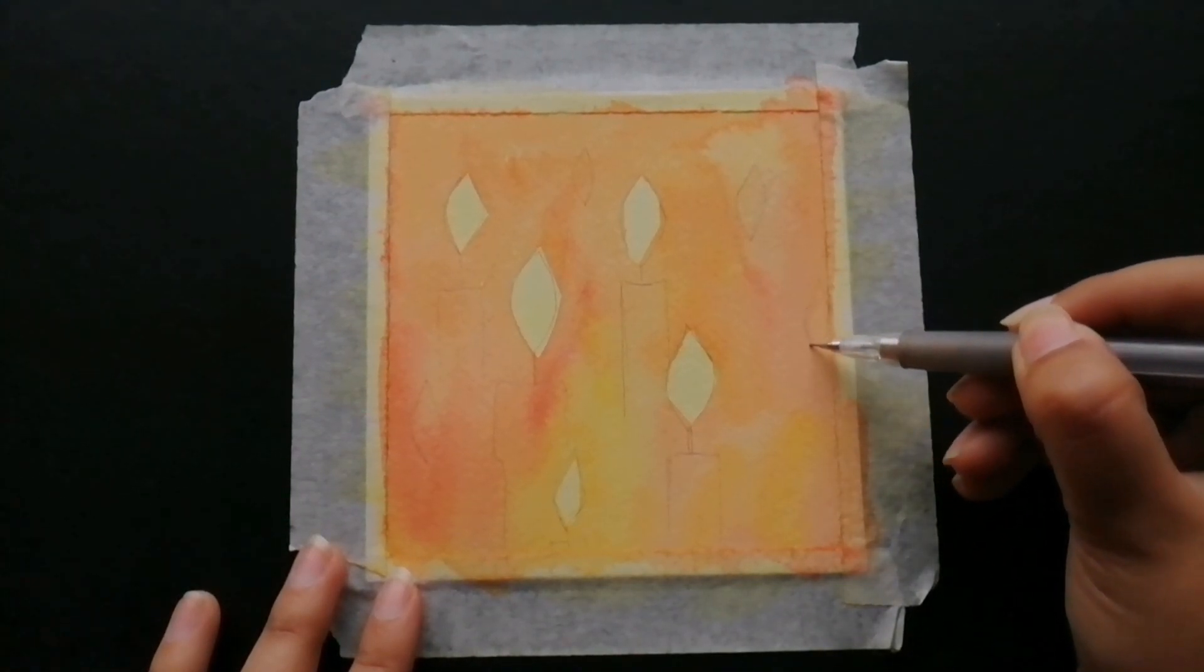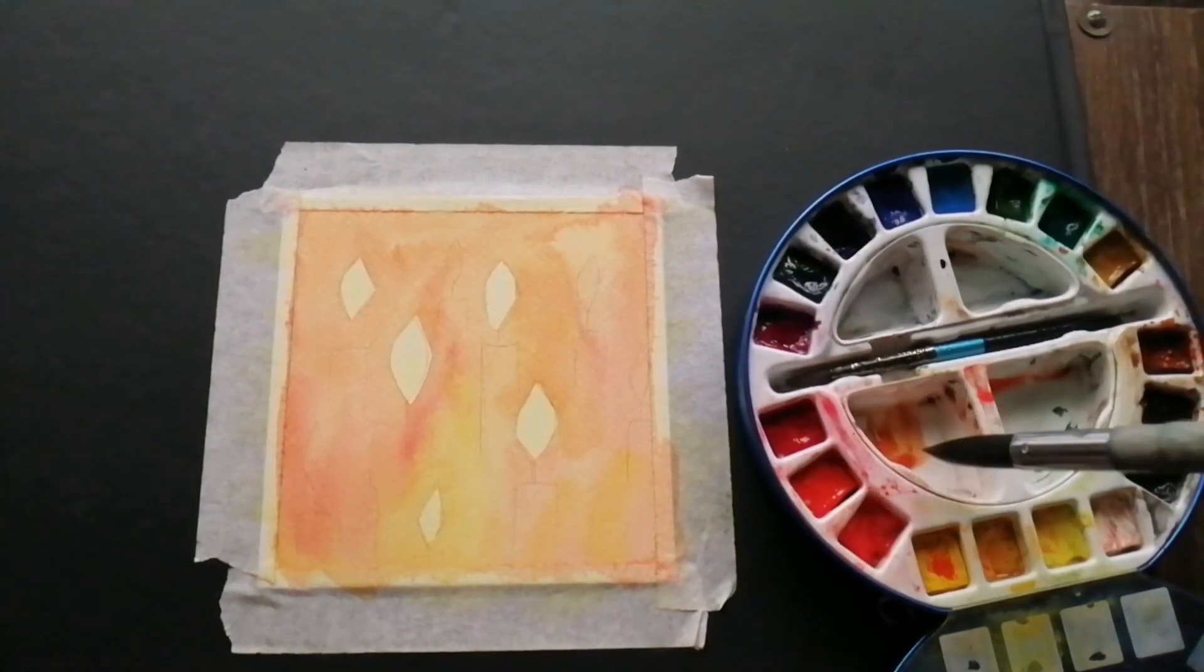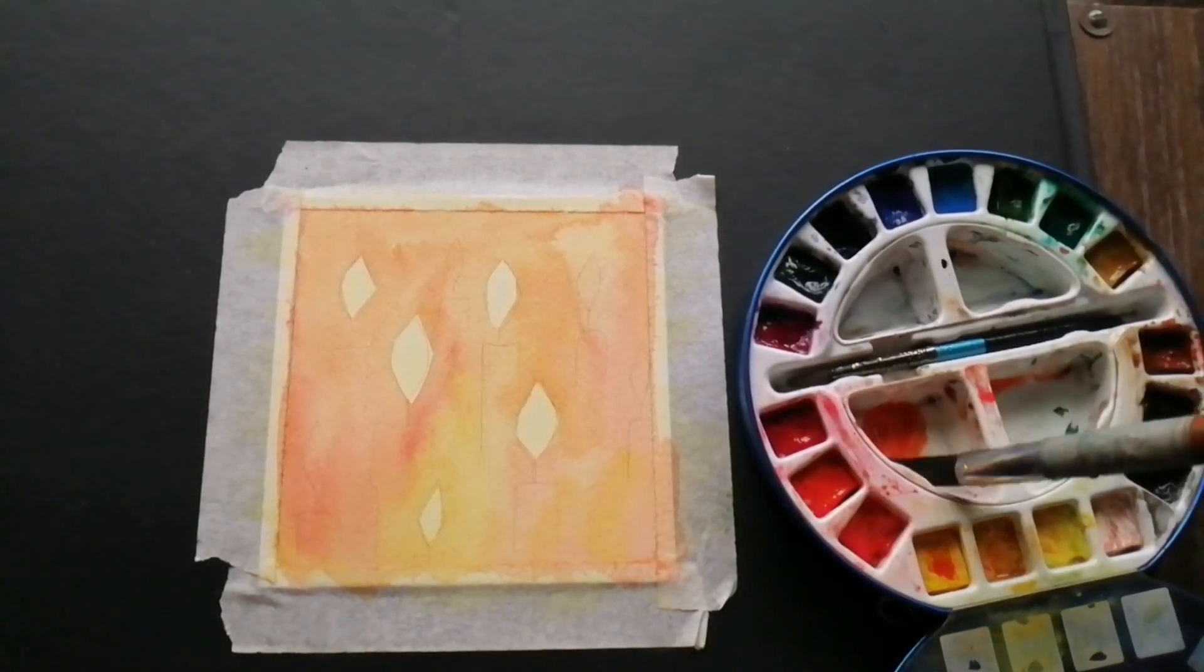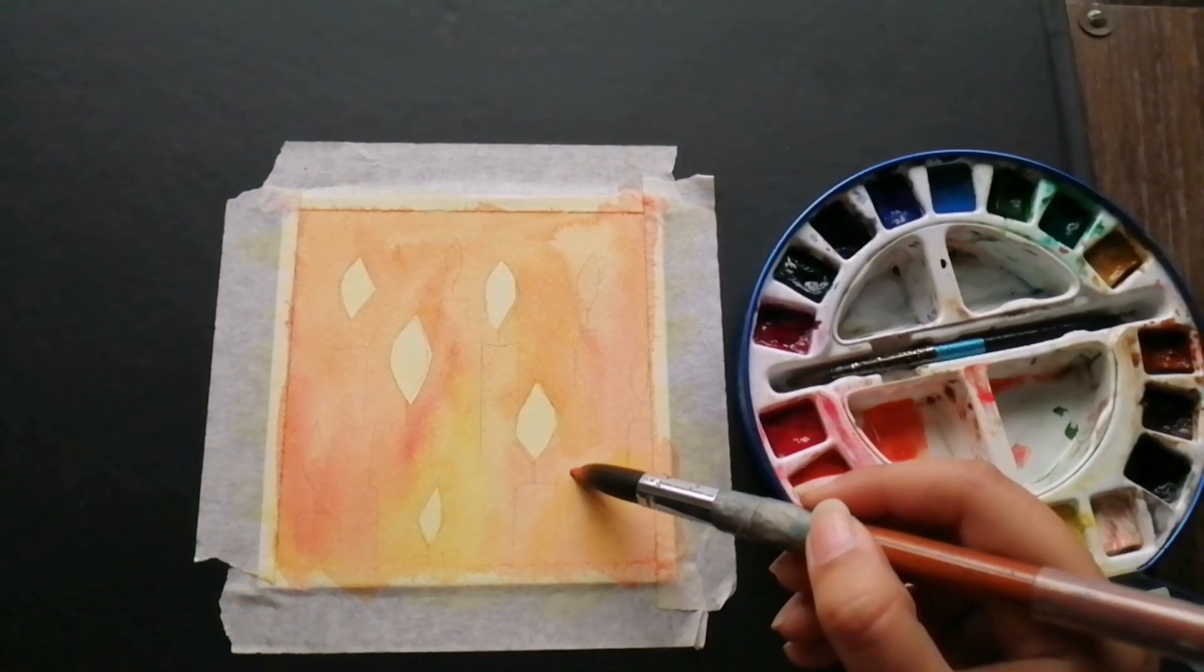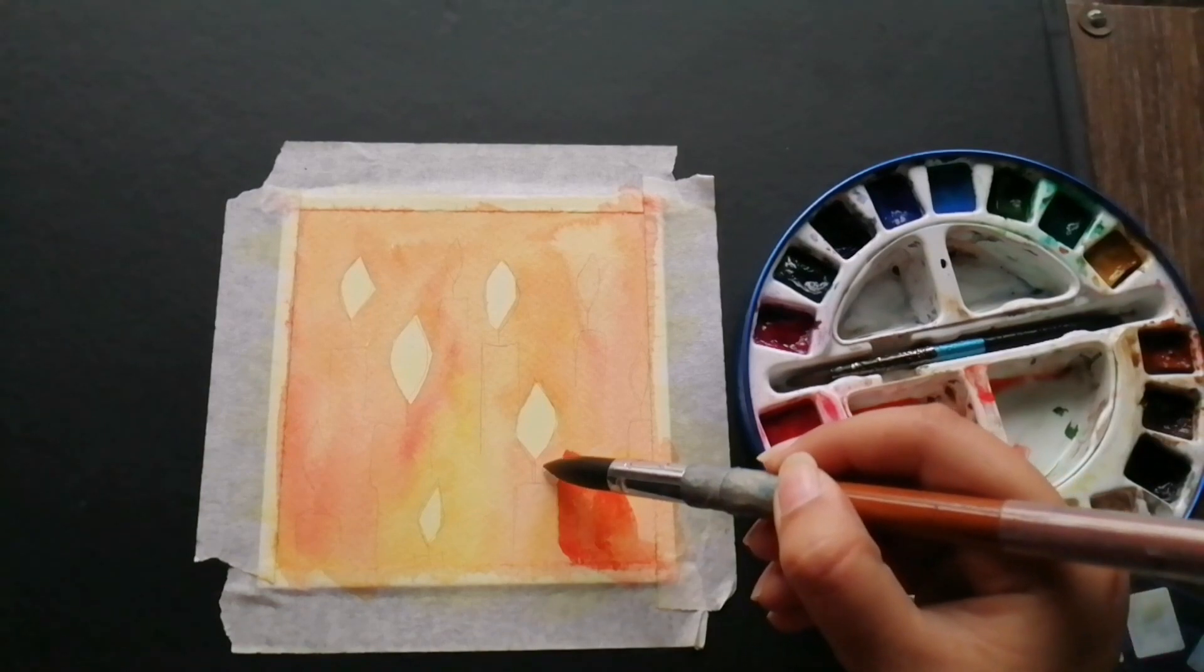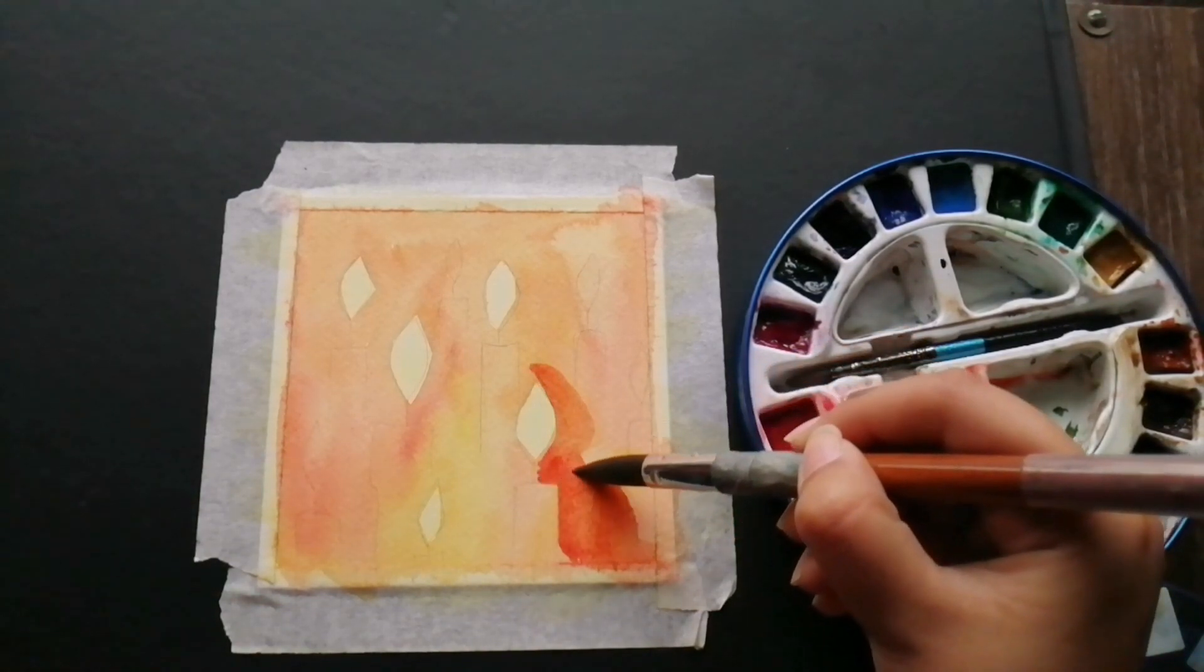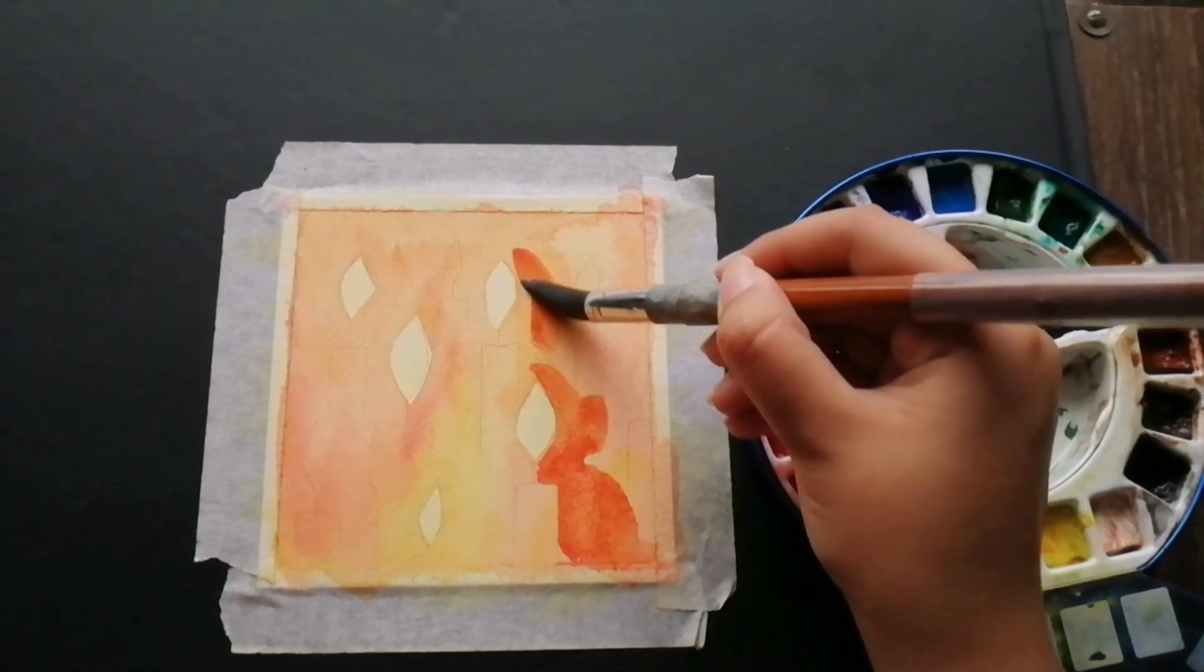If you want, you can add a few more flames here and there. Next, you're going to mix browns and reds and then paint around the flames and candlesticks once again. This is the only trick you need to follow for this painting—it's a negative space painting which works in layers.